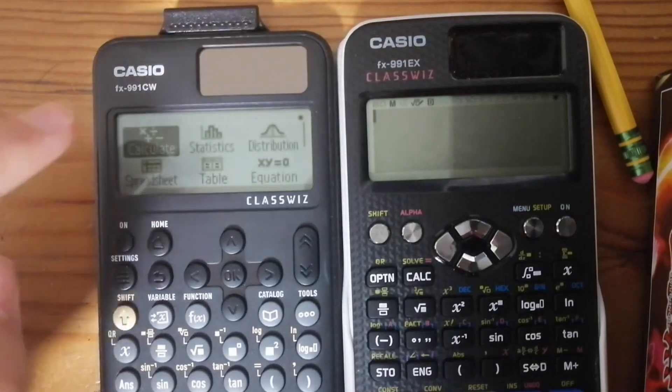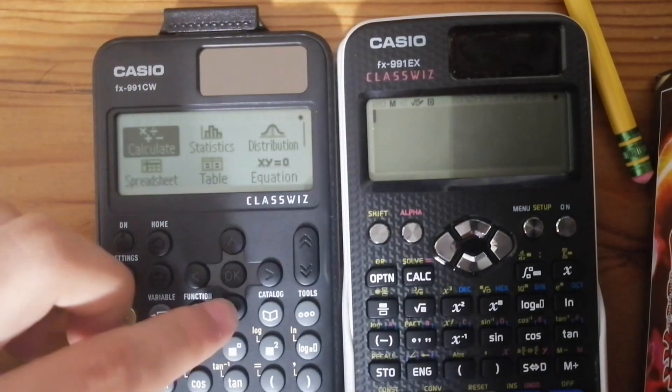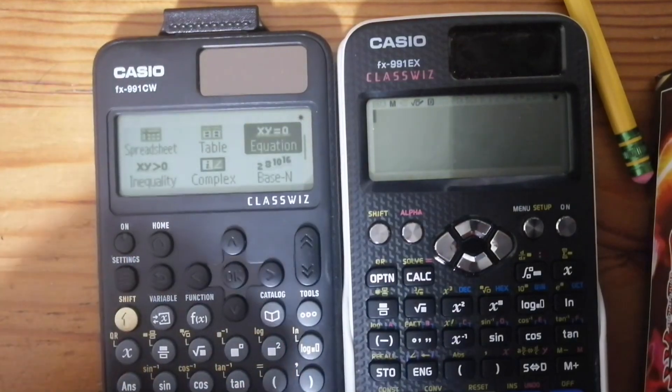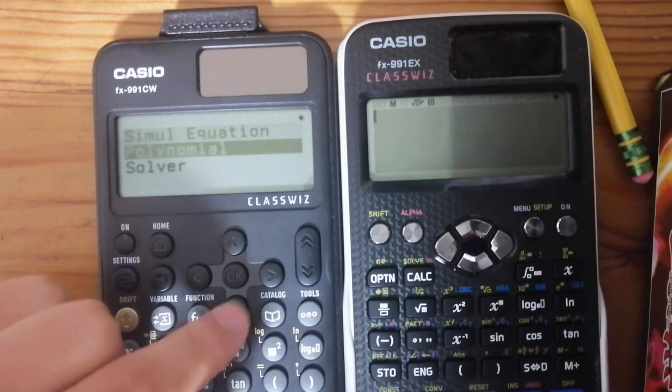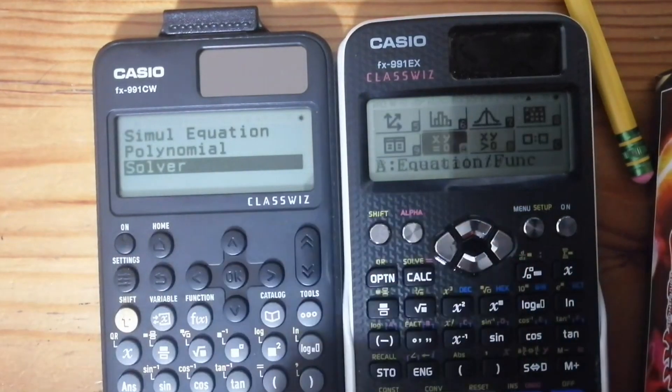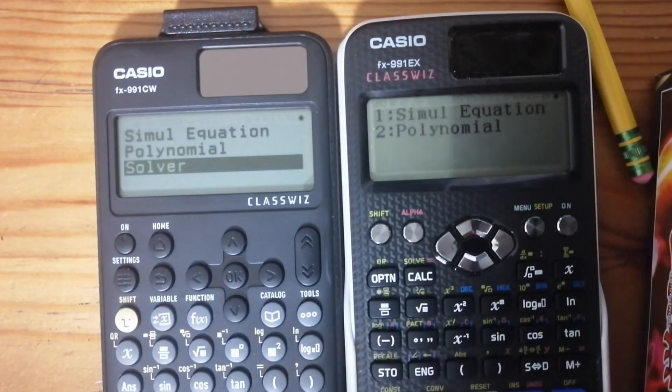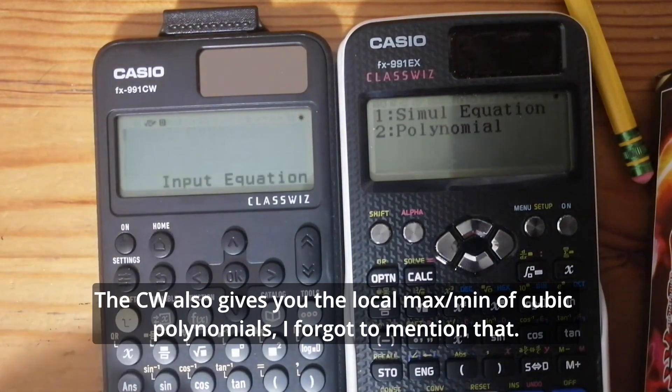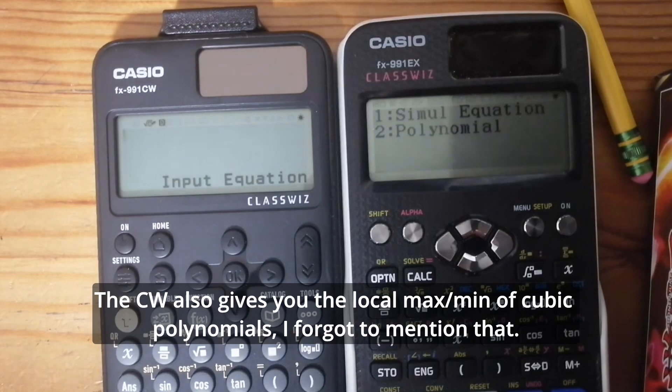But that's about, I think those are the two biggest changes they have. Another thing they have is under the equation section here. There's actually a third section. If I go over here to equation, you'll only see two: simultaneous equation and polynomial. Here, there's a third one called solver. What it does, it lets you input an equation, and then you can just solve, and it just solves for the variable. For example,